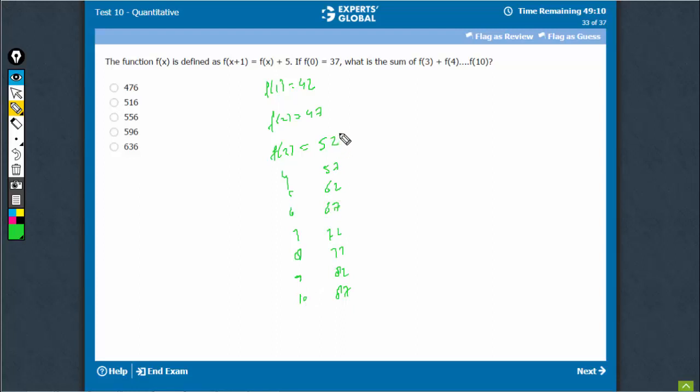One way would be to take an odd number of terms. See, 3 to 9 is 7 terms and the middle value is 67. So the sum of these 7 terms would be the middle term times the number of terms because the common interval is the same. So 67 times 7 will give you 469 and then add 87 to this, you get 556.